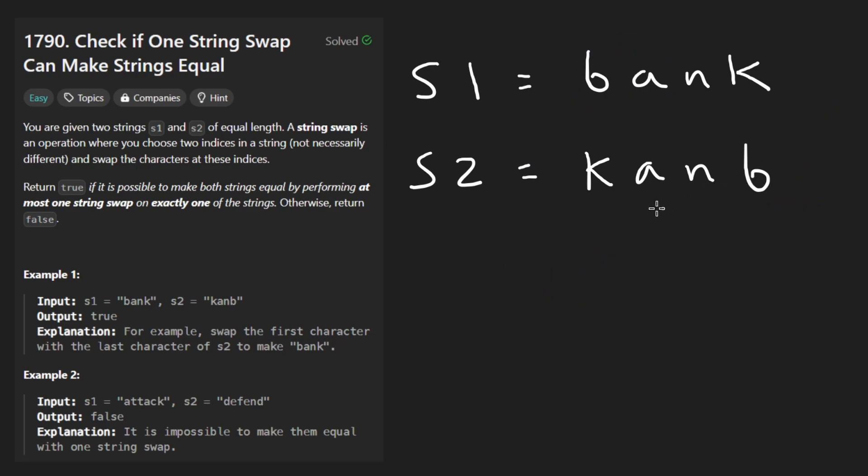I think it's clear that if the two strings are indeed equal or they can be made equal, either they already started equal. I think that's the simple case. So s1 equals s2. That's the very simple case. The other case would be that we do have to perform a swap.